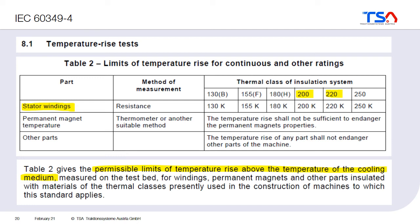There are also other parts in the machine where temperature can be critical — for example the permanent magnets and the bearings. Because there are so many different materials and it depends on the design of the machine, you cannot specify a single value for temperature rise for these parts. The standard only tells us that the temperature rise shall not be sufficient to endanger the permanent magnets or other parts of the machine.